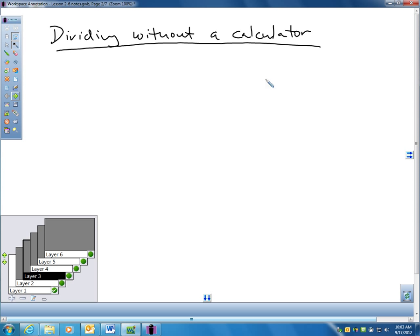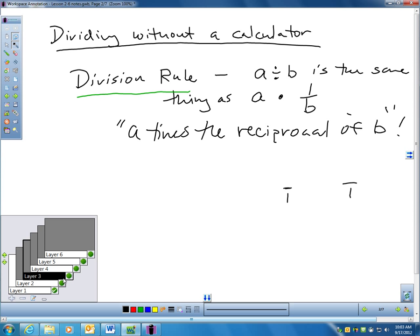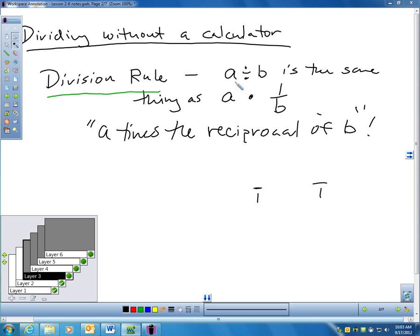So next, let's talk about dividing without a calculator. This is material I would make you do without a calculator. There's a simple rule for division that we should know. And it's simply this: if you take A divided by B, that's the same thing as taking A times the reciprocal of B. That's simply the same as taking A times the reciprocal of B.